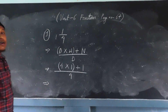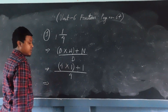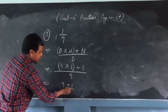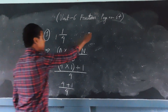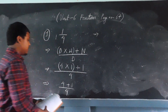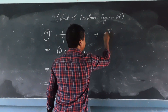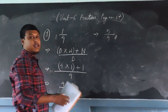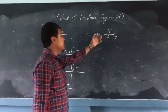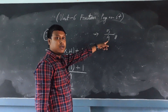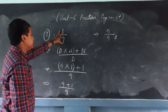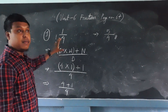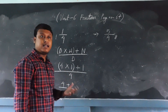First solve the numbers in the bracket: 4 times 1 is 4, plus 1, divided by 4. That gives us 4 plus 1 is 5, then 4 stays in the denominator. So we get 5/4, which is a fraction in improper form because the numerator is greater than the denominator. This is how we convert a mixed number into an improper fraction.